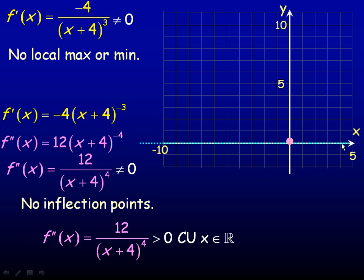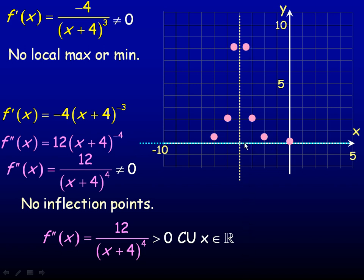Let's graph the function. The horizontal asymptote is at y equals 0 and the vertical asymptote is at x equals negative 4. To plot more accurately, I substitute values like negative 2, negative 3, negative 3.5, negative 4.5, negative 5, and negative 6 into the original function. To the far left, the graph stays above the horizontal asymptote and rises toward the vertical asymptote. The same behavior occurs on the right side — it stays above the horizontal asymptote and rises near the vertical asymptote.